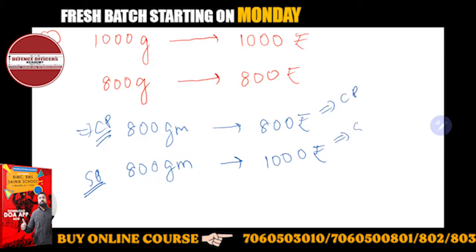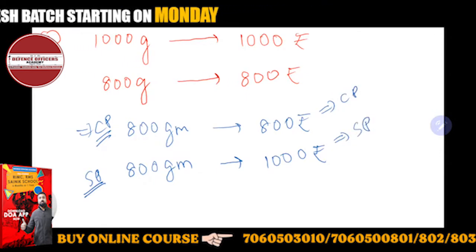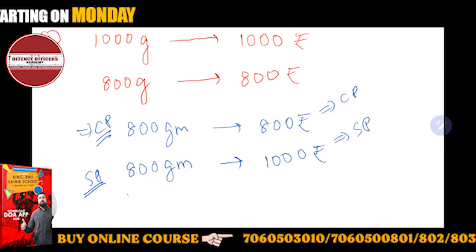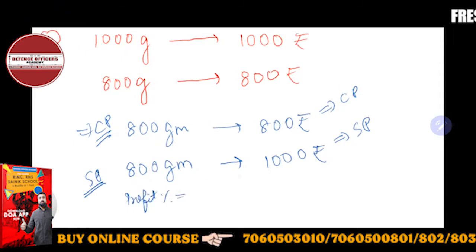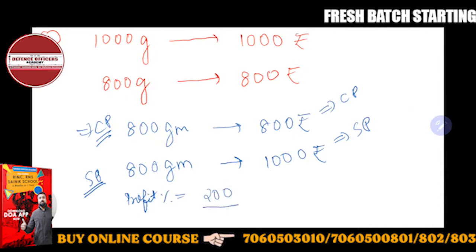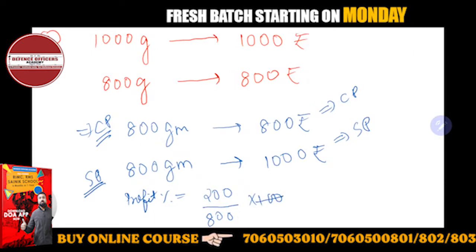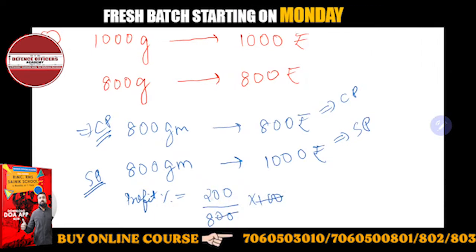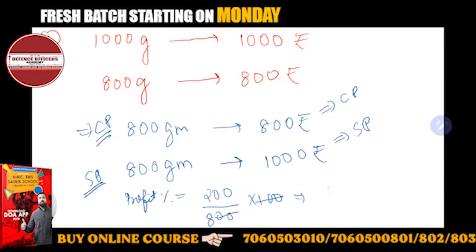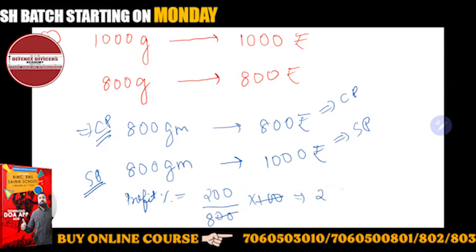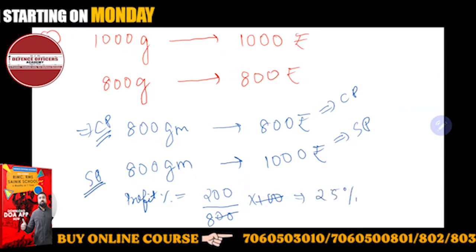So 1000 rupees becomes the SP. In this case, how much profit is there? Profit percent = profit upon CP × 100. Profit is 200 rupees upon CP of 800, into 100. When you cancel, 25% — this comes out to 25% profit.